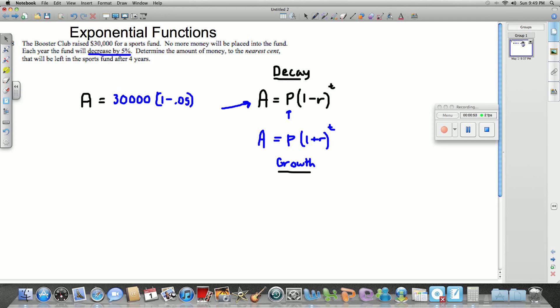And the time, t, is 4 years. So we're going to put a 4 in that position. Now, we can simplify the parentheses. So here we get 0.95. That would be like a dollar minus a nickel. And that's going to raise it to the fourth. Then we have the 30,000 again.